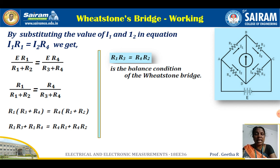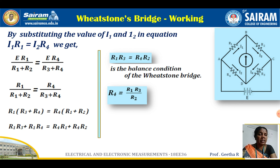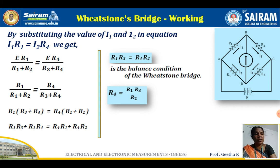The balance condition of the Wheatstone bridge is R1×R3 = R2×R4. Therefore, the unknown resistance R4 equals (R1×R3)/R2, or the ratio R1/R2 multiplied by R3 gives the value of R4. This is how the unknown resistance is calculated using the Wheatstone bridge. We'll continue in the next session with the sensitivity, applications, errors, and limitations of the bridge.